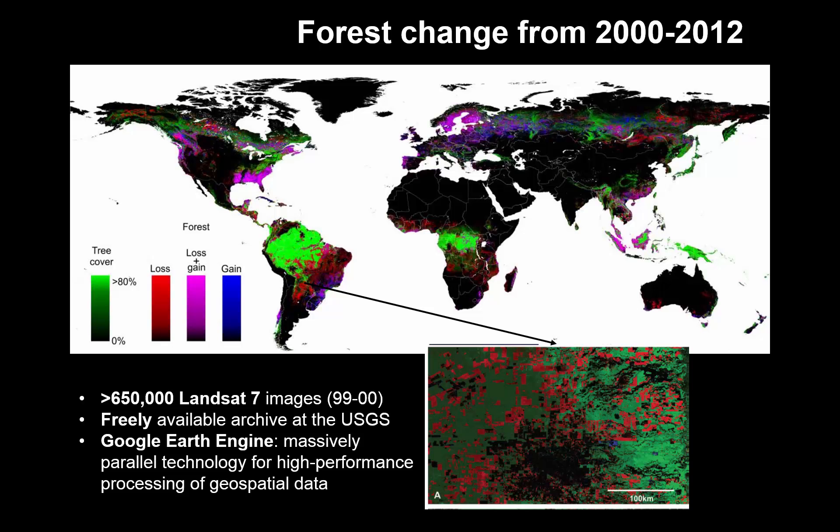For those not familiar with Google Earth Engine, this is a massive parallel technology of high performance processing of geospatial data and houses a copy of the entire Landsat archive. What would have taken a single computer around 15 years was completed in a matter of days using Google Earth Engine computing. Similar facilities are provided by the National Computer Infrastructure here at the Australian National University.